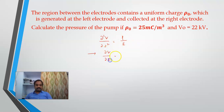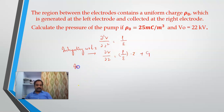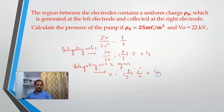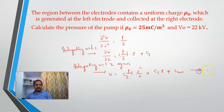Integrating once with respect to z gives dV/dz equals minus rho over epsilon times z plus c1. Integrating again gives V equals minus rho by epsilon times z squared over 2 plus c1 times z plus c2. So voltage at any point is V equals rho by 2 epsilon times z squared plus c1 z plus c2.